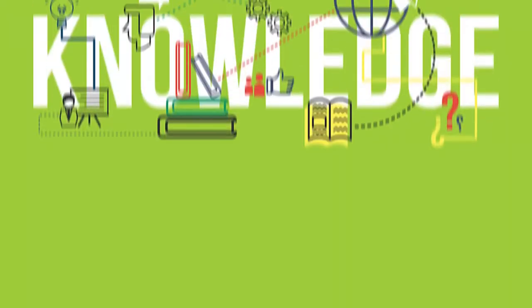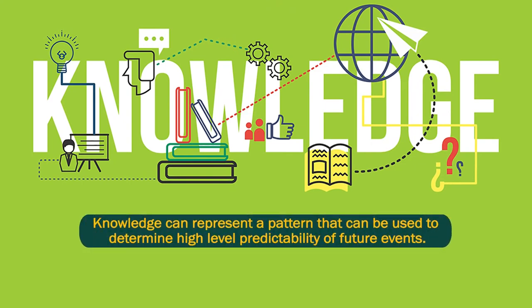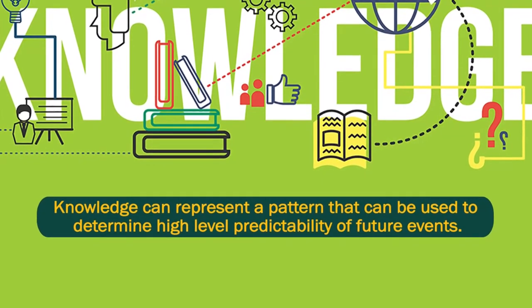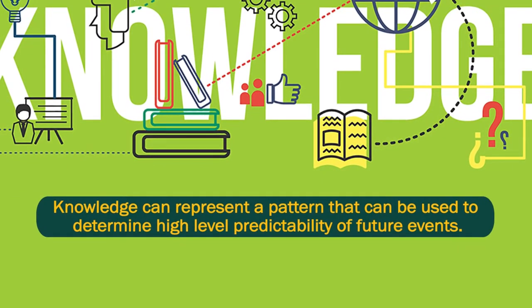The analysis of information you have received is very important — it must be converted into actionable knowledge, which can then lead to intelligent decisions or intelligent behavior such as solving a problem. Suppose you know all the multiplication tables and learn how to multiply two or three digit numbers; you can apply that knowledge to any domain. You can extend your knowledge to four-digit multiplication and so on. Knowledge must be put into proper perspective, and you develop expertise in its use. Knowledge can represent a pattern that can be used to determine high-level predictability for future events.